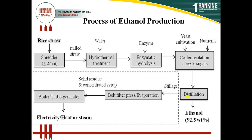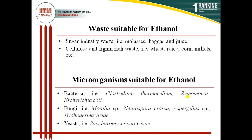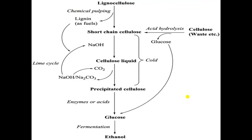Now, what type of agricultural waste can undergo ethanol production? Since we are producing ethanol from glucose, the waste must be rich in carbohydrate. It does not matter if the carbohydrate is in polysaccharide form, because polysaccharide can be converted into monosaccharide. There is no problem with that.